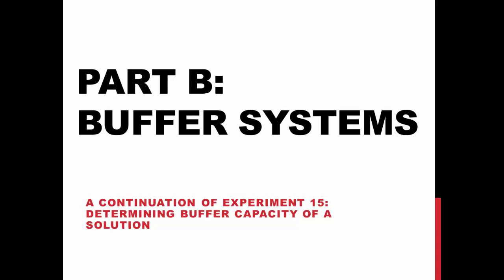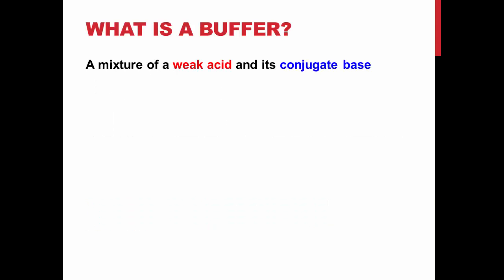This experiment is a continuation of experiment 15a, and takes a more in-depth look at buffer systems, such as those briefly examined in the first part of this experiment. A buffer is a solution consisting of a mixture of a weak acid and its conjugate base. These mixtures are able to resist changes in pH when small amounts of acid or base are added.